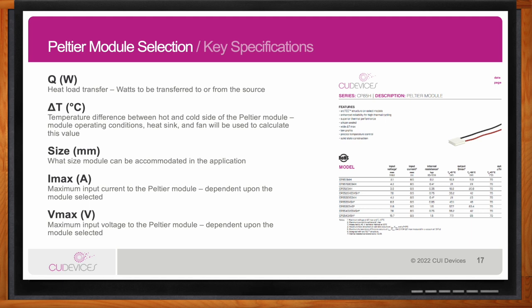The fourth and fifth specifications are I-max (input current) and V-max (input voltage). An important note is that unlike a DC fan's voltage and current rating, Peltiers should not be driven at their maximum ratings. If you operate a Peltier at maximum ratings, the delta T — the change in temperature — will be zero, achieving no cooling. This is a very important consideration when determining if a Peltier works in your application.